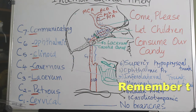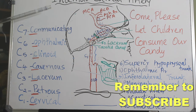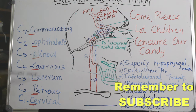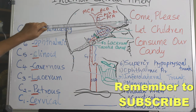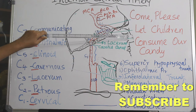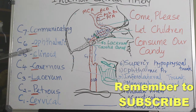So there are seven segments of the internal carotid artery according to angiographic anatomy. You can remember them with the mnemonic: 'Come Please Let Children Consume Our Candy' — corresponding to Cervical, Petrous, Lacerum, Cavernous, Clinoid, Ophthalmic, and Communicating segments.